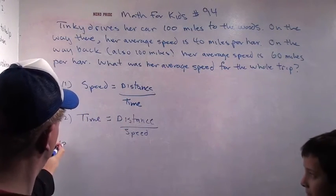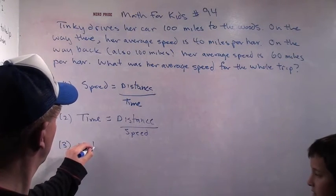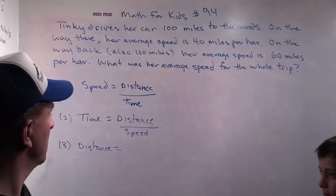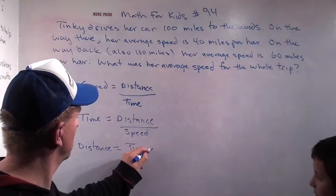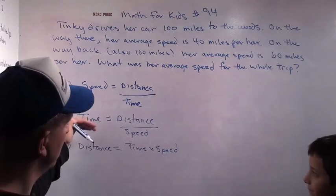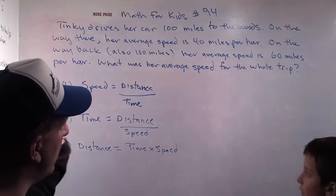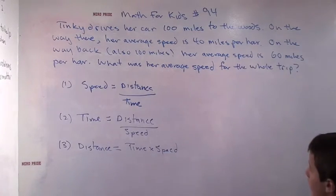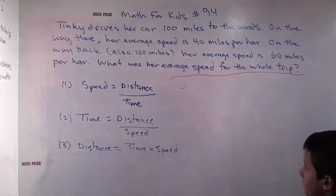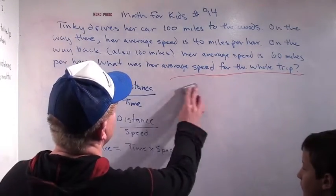And what's the third version of this equation? Distance equals time times speed. So, this is our first principle: speed is distance divided by time, which means time is distance divided by speed. In our problem, what are they asking for? The average speed for the entire trip. So, that means which of these equations are we going to be looking at? Number one — speed equals distance divided by time.